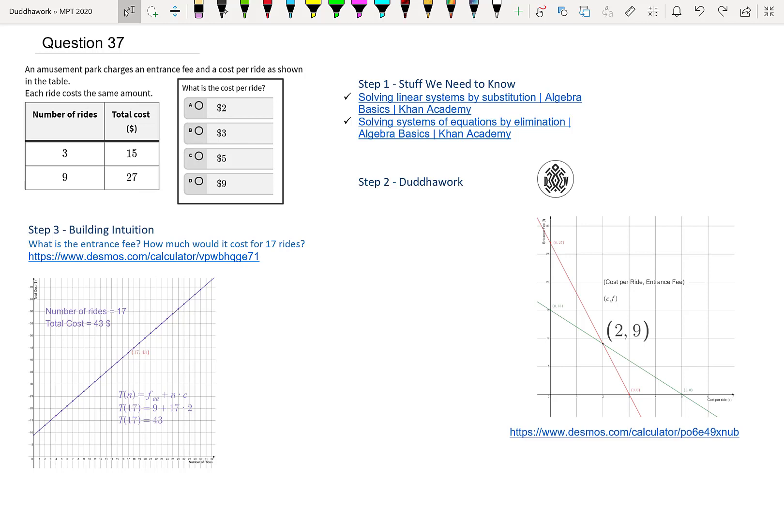We have an amusement park which charges an entrance fee and a cost per ride as shown in the table. Each ride costs the same amount. So if you ride three times, your total cost will be $15. So before we get any further, we have a total cost, which in this case is $15 for the first case. And we have an entrance fee that's for everyone. So let's call it F. And then we have the number of rides, let's call this N. And the cost per ride, let's call this C.